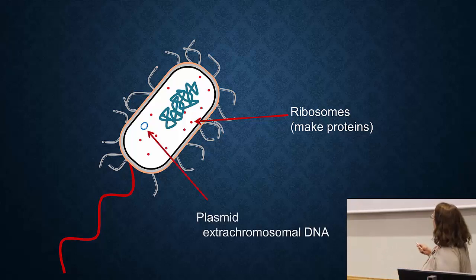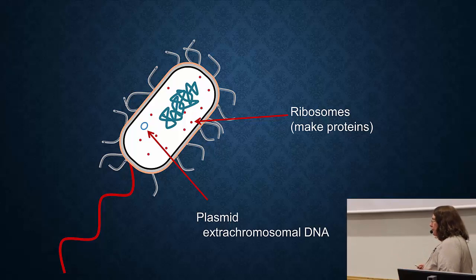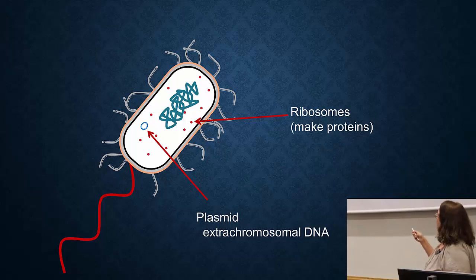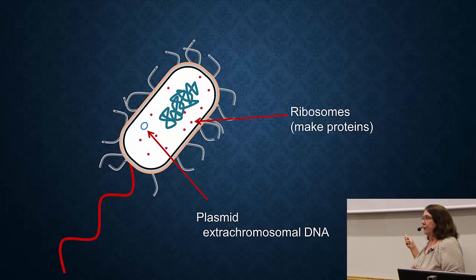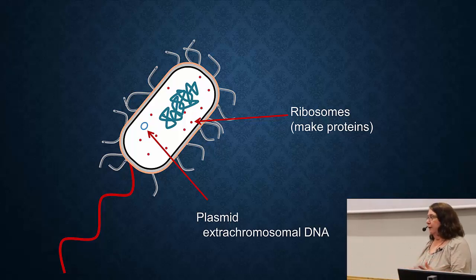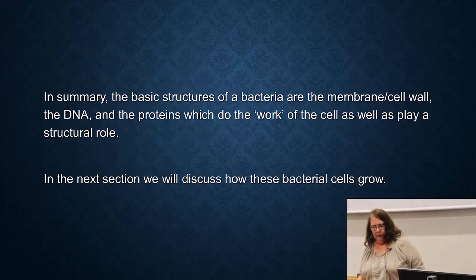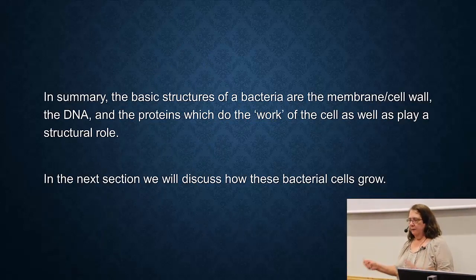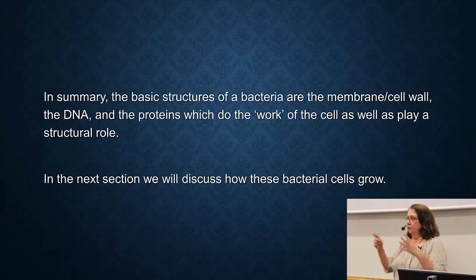There is also a small blue circle indicating a plasmid. A plasmid is also DNA, but extra DNA — it is not part of the normal chromosome. It's an extra piece of DNA that, in this course, becomes really important because plasmids often carry antibiotic resistance genes. They're usually not required for the cell to survive, and they can move around between cells. In summary, the basic structures of a bacterium are the membrane and cell wall, the DNA, and the proteins that do the work of the cell.